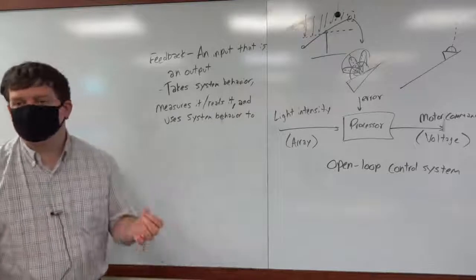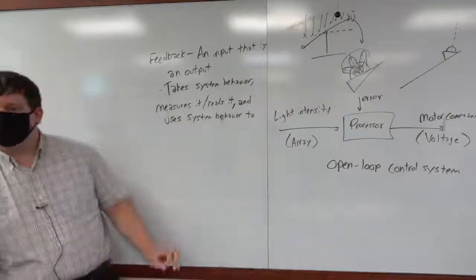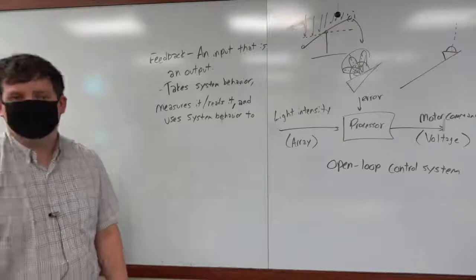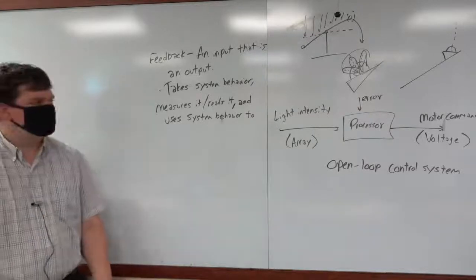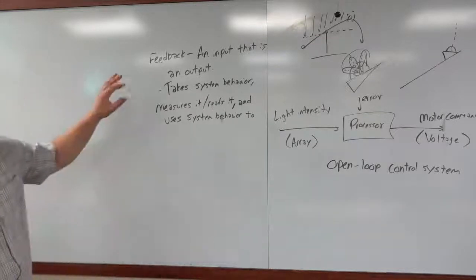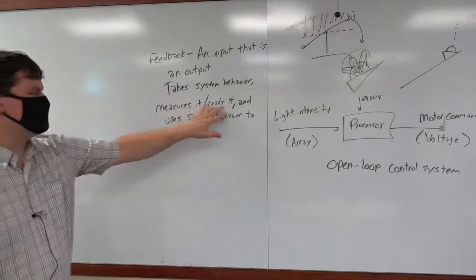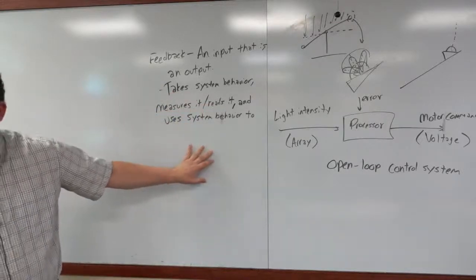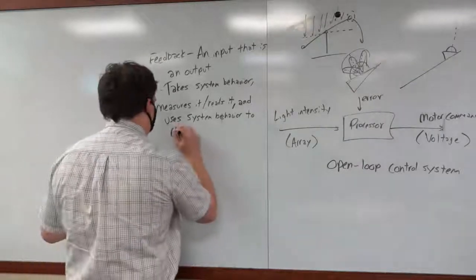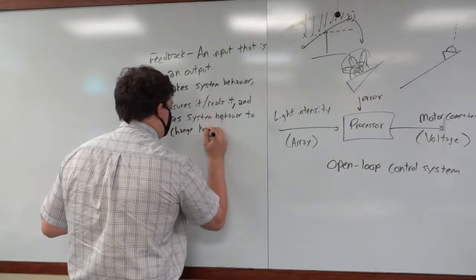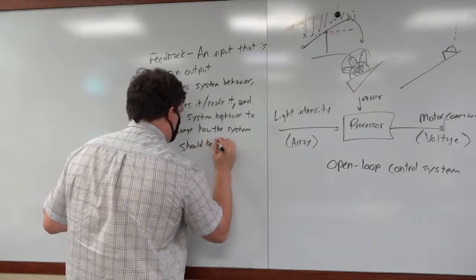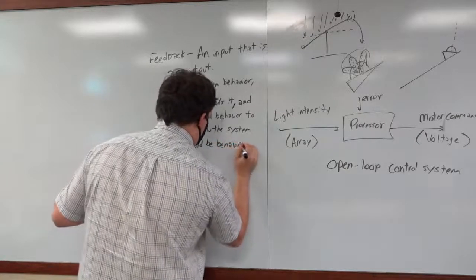So what feedback does is it takes system behavior, measures it or reads it. If it's information, sometimes you can't measure a true sometimes. Sometimes you just read that information and uses system behavior to inform whatever the controller is of the process's effectiveness. By doing so, what it does is that you're inputting into the system. It takes the system behavior and measures it and it reads it, and it uses that system behavior to change how the system should be behaving.